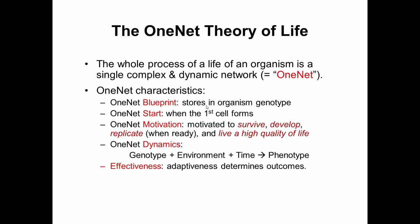The one-net starts when the first cell — like the fertilized egg — forms. The one-net is motivated to survive, develop, and replicate whenever possible, and to live a high quality of life. The dynamics are determined by genotype, environment, and time, which produce the phenotype. The phenotype can be hidden and has information in the genotype-environment interaction. Effectiveness determines all the outcomes.